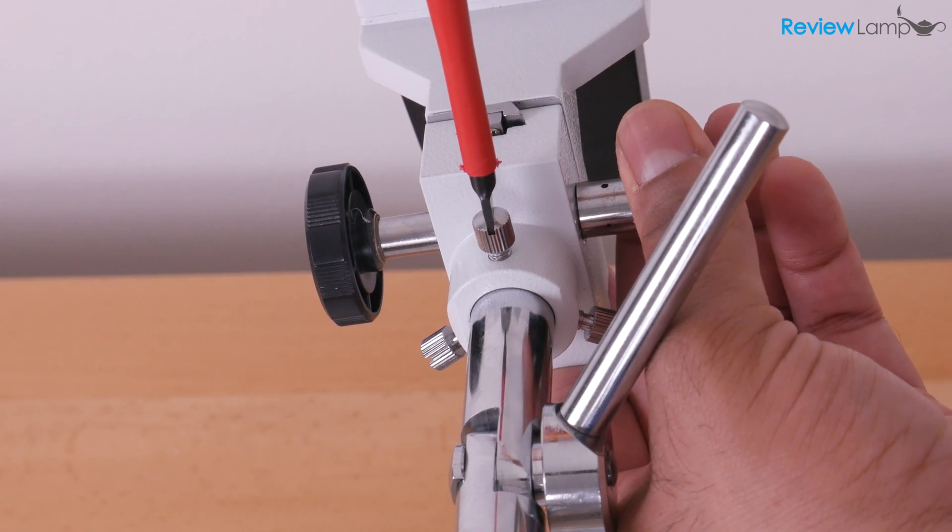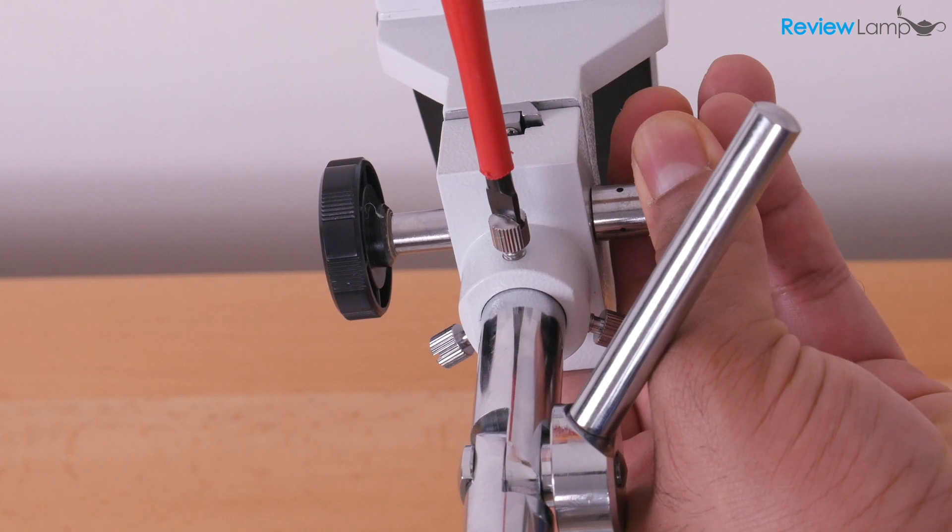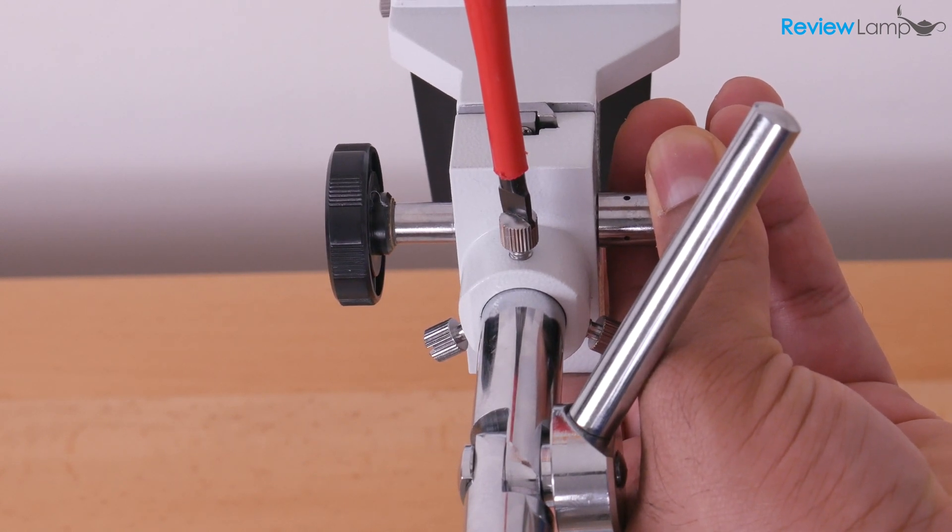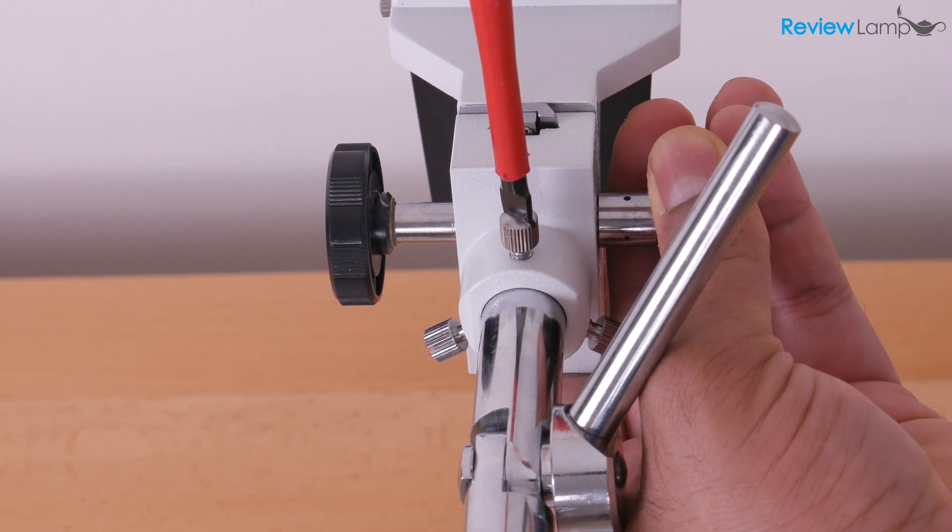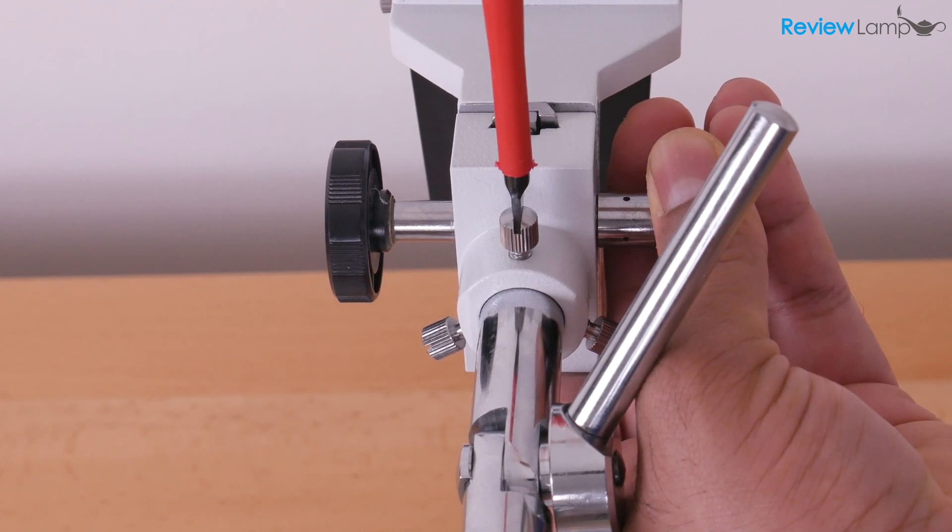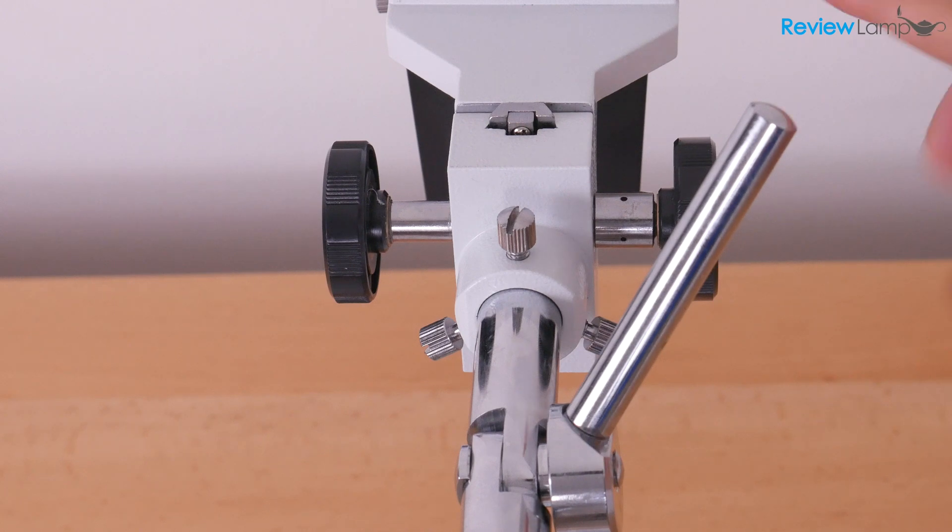So grab your flat screwdriver, insert it, turn it counterclockwise till it loosens up, and then gently adjust the microscope head to where you think is about level. Obviously you can use a level if you want to be perfect, but I'm just going to eyeball it for now. And it looks horizontal enough to me. And when you're ready, tighten that screw back up to ensure that the head stays in place.